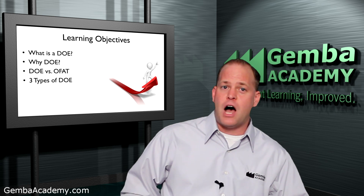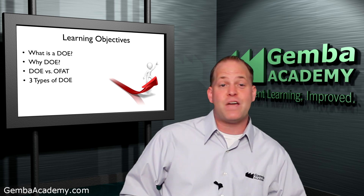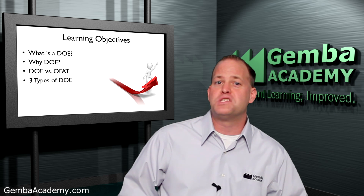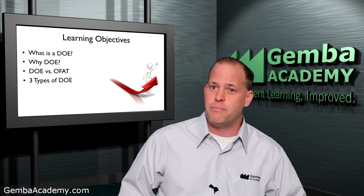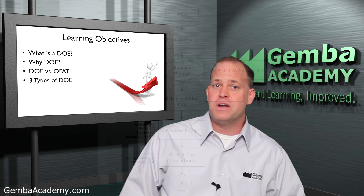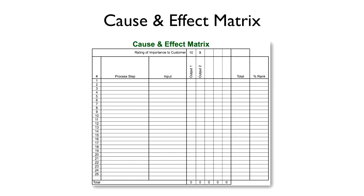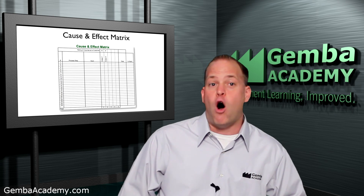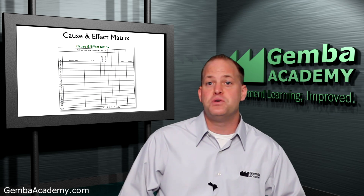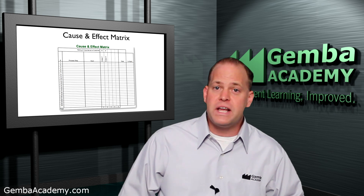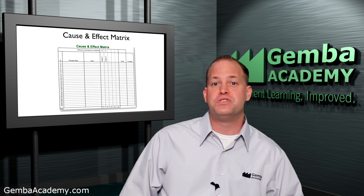Before we jump into the topic of DOE, we'd like to take a step back and review a few important concepts we've learned thus far in this course. Early in the course, we learned how to create different types of process maps, which allowed us to identify the many different inputs, or X's, associated with the process. We then learned how to use a cause and effect matrix to identify critical inputs based on their impact to key customer requirements — loading all inputs from process mapping into the C&E matrix to gain a better understanding of which factors are the most significant.